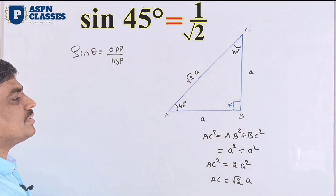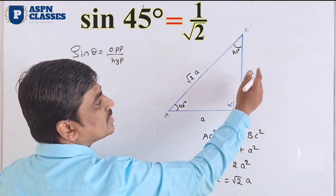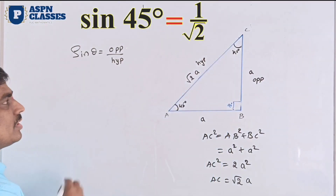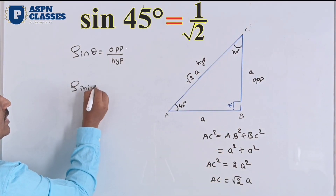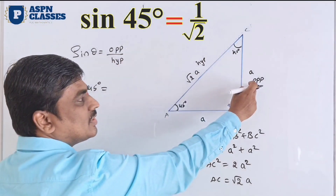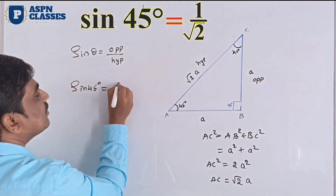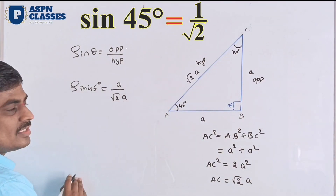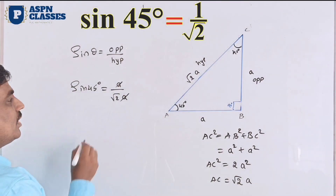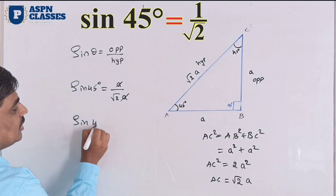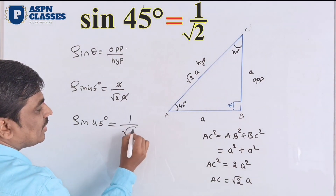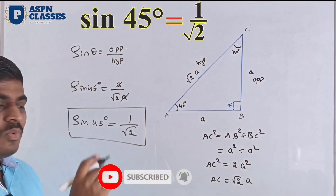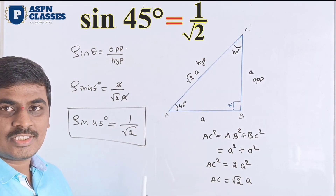For 45 degrees, I will consider the opposite side — this is the opposite side, and this is the hypotenuse. So sin(45°) equals opposite divided by hypotenuse, which is a divided by √2·a. Canceling a, the answer is 1/√2. Sin(45°) = 1/√2.